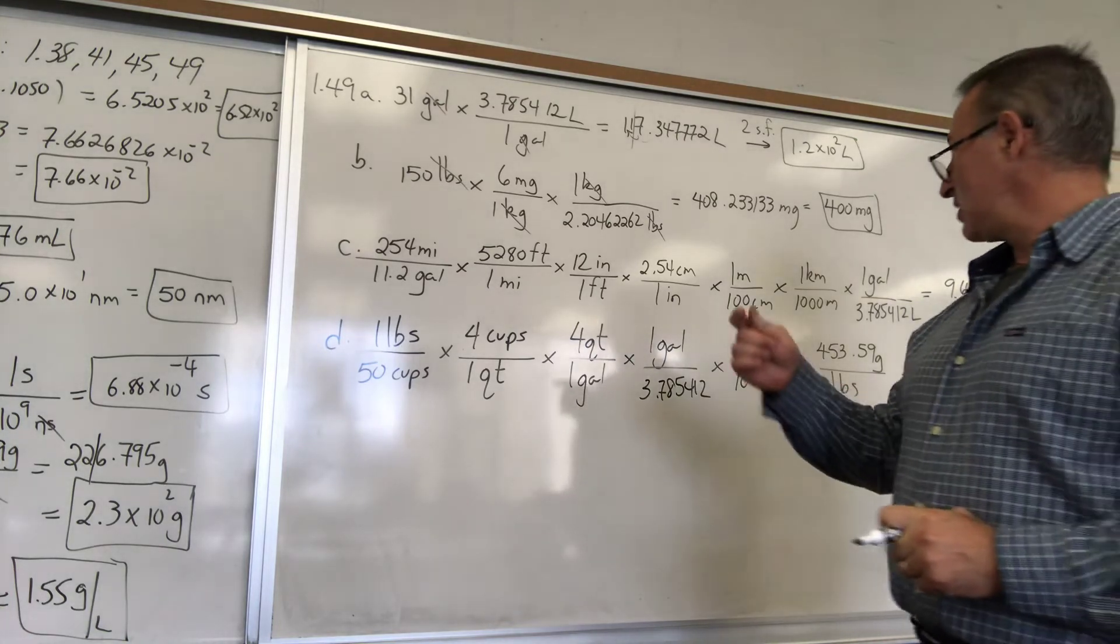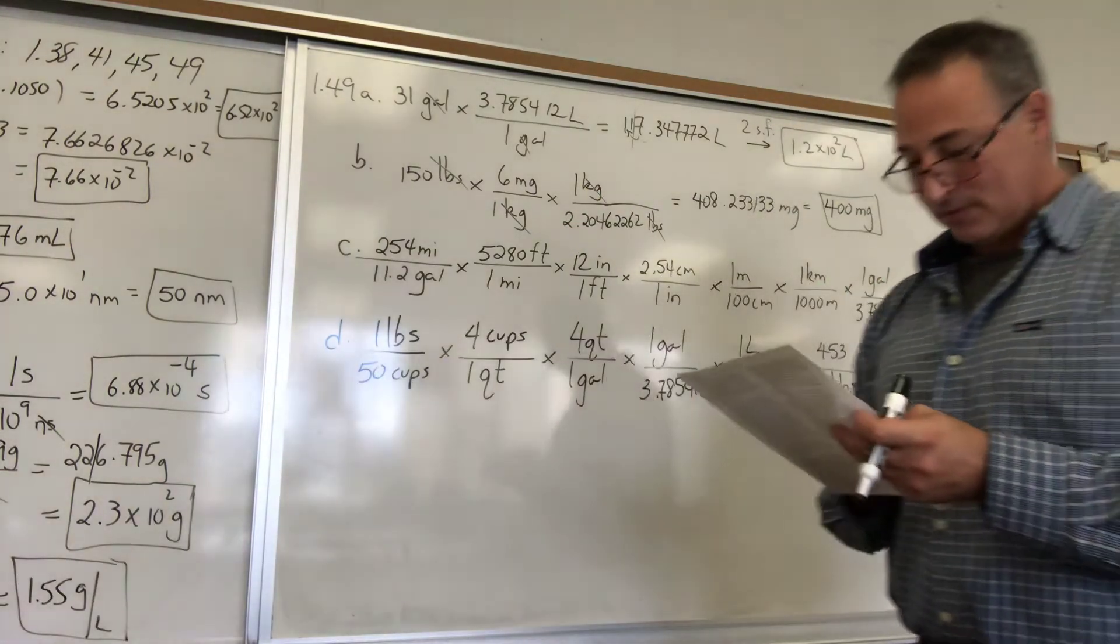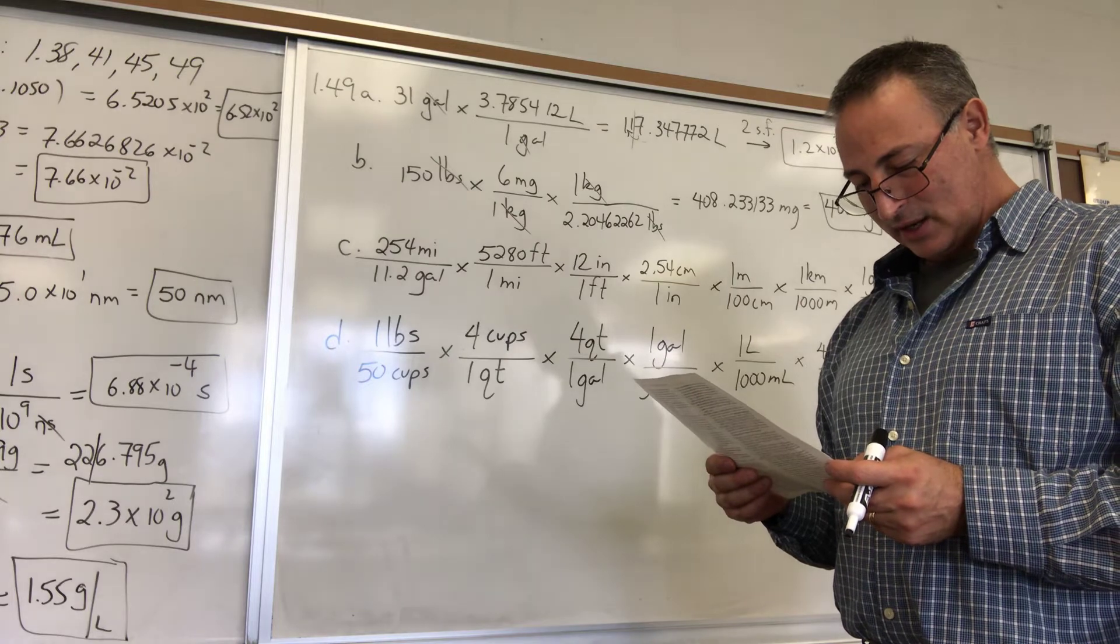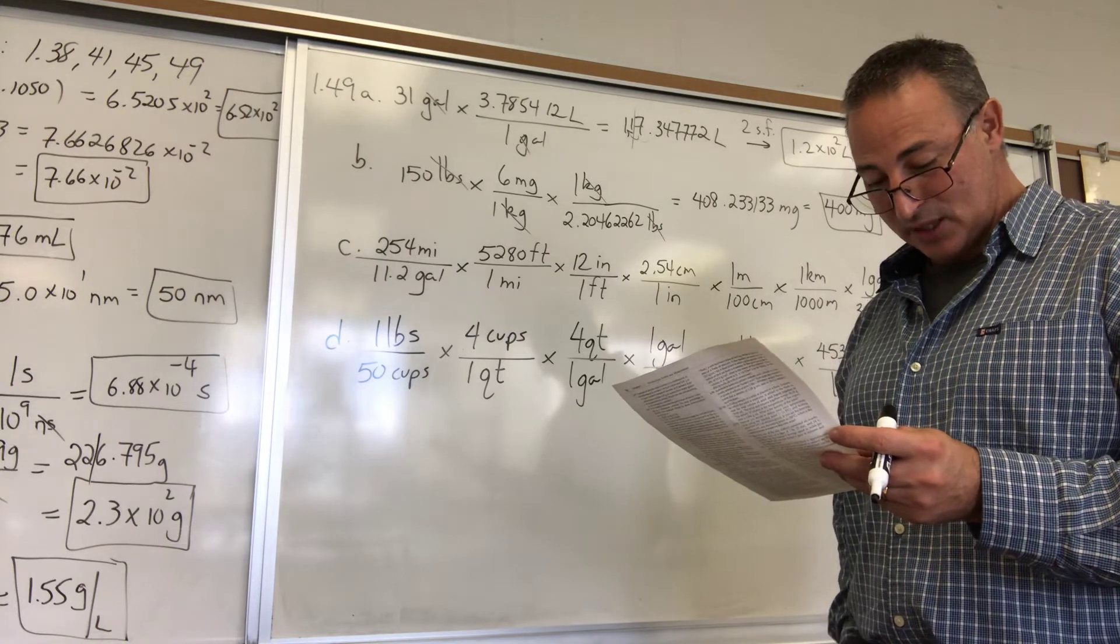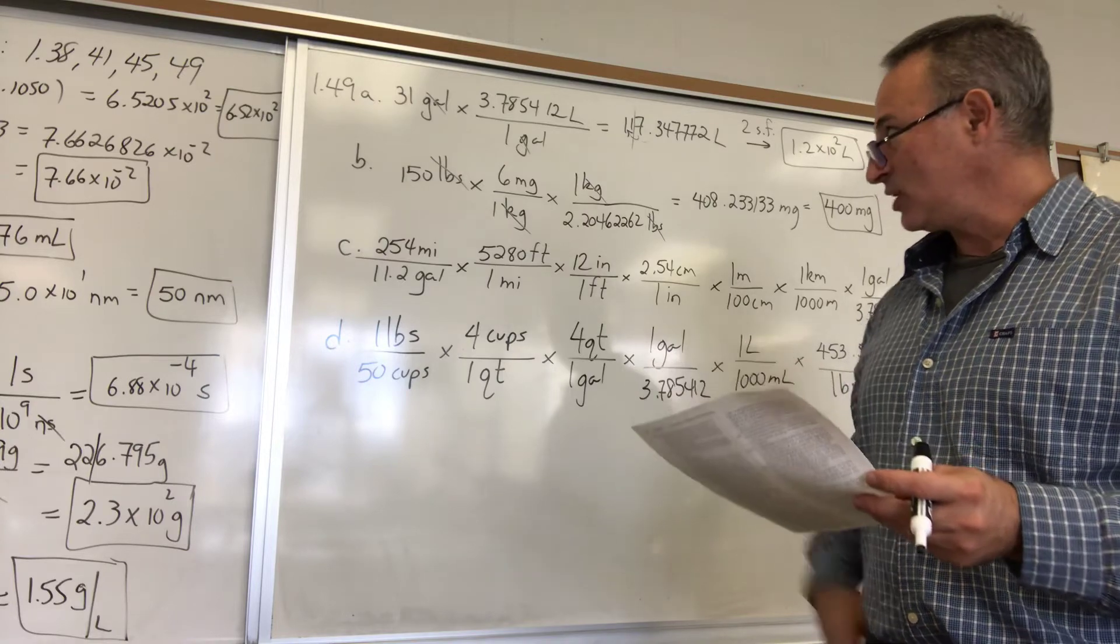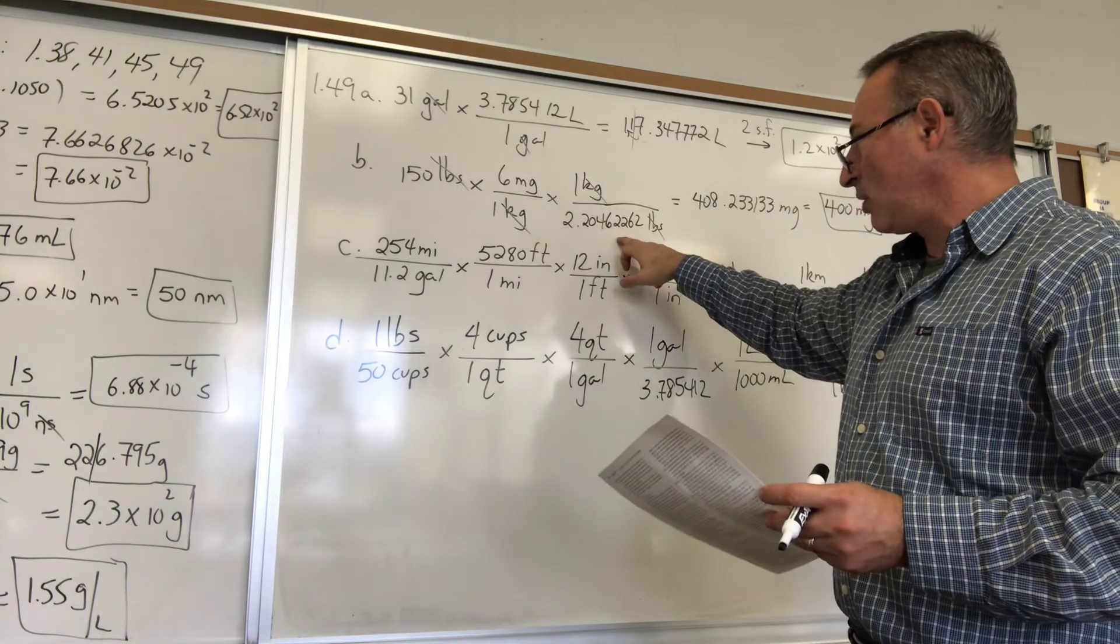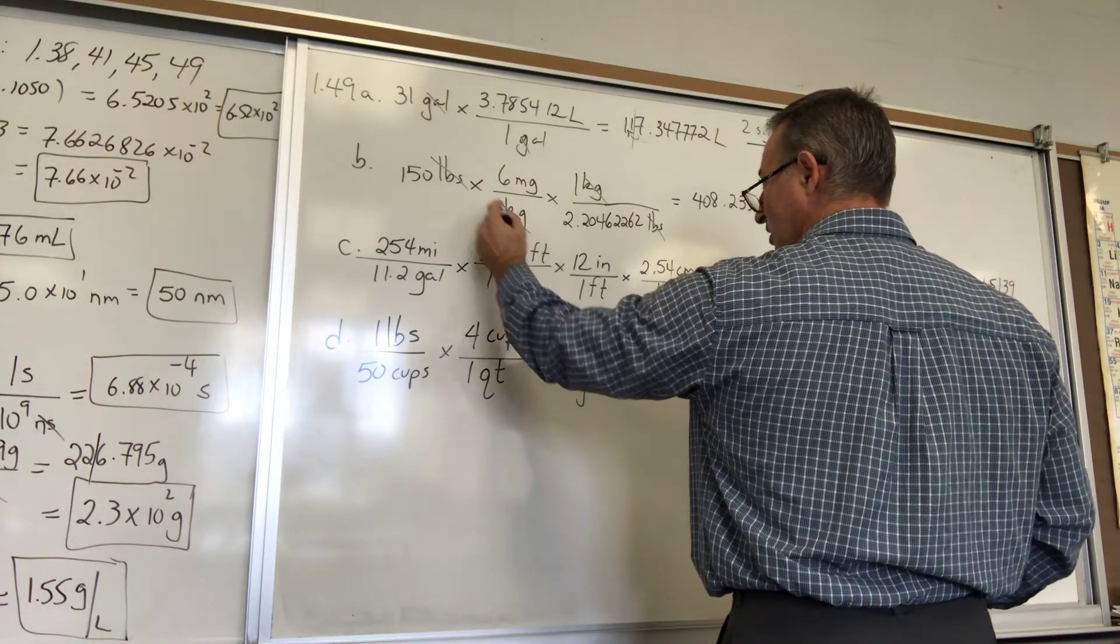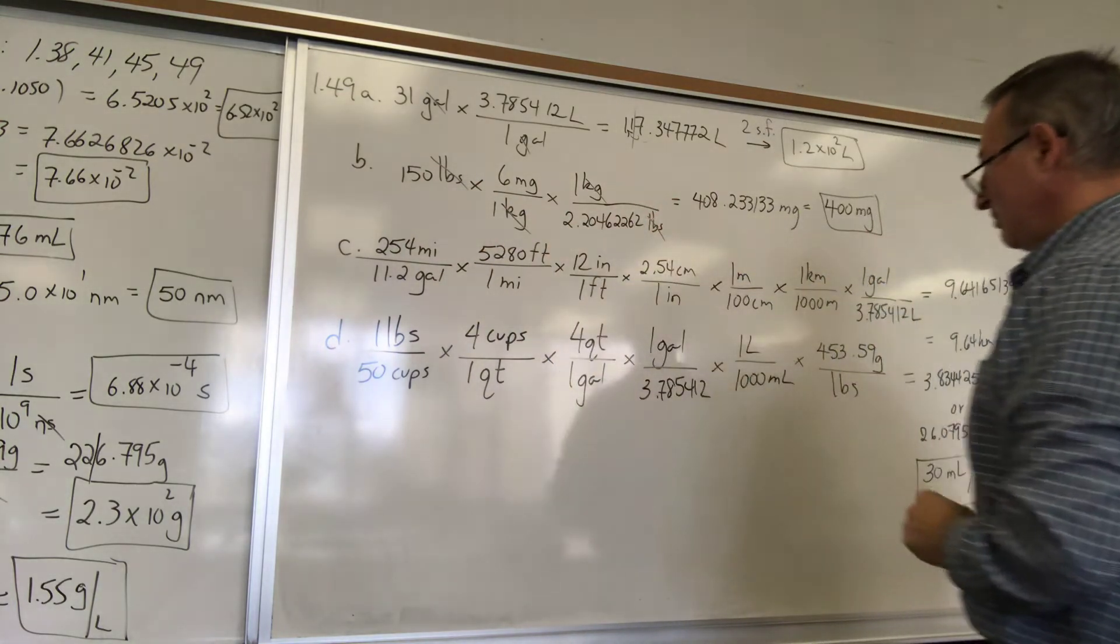The next thing is 150 pounds being converted to milligrams. So, well, let me read you the question because this one's a bit more complicated. 49B. It says, the recommended adult dose of elixophyllin, a drug used to treat asthma, is 6 milligrams per kilogram of body mass. Calculate the dose in milligrams for a 150-pound person. So you need 6 milligrams per kilogram of body weight. A person weighs 150 pounds and it's 1 kilogram per 2.204 pounds. So the pounds cancel. The kilograms cancel. And you're going to multiply 150 by 6. Divide by 2.204. And you get 408 milligrams of the drug.